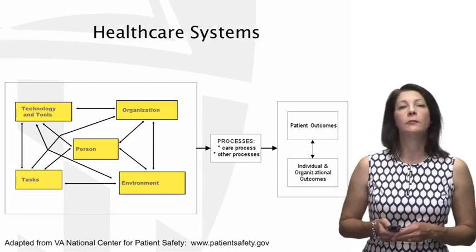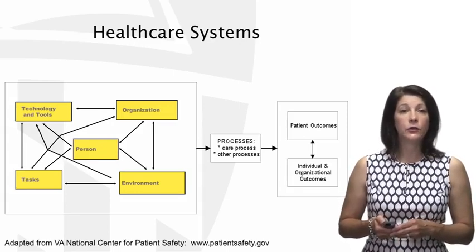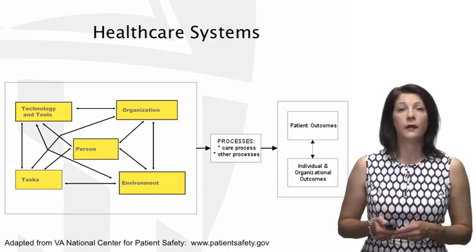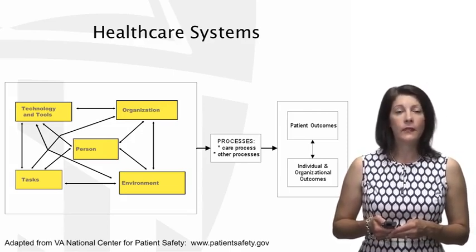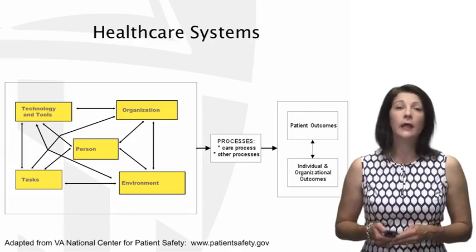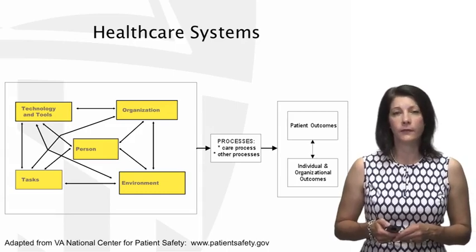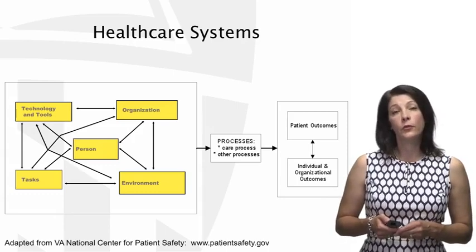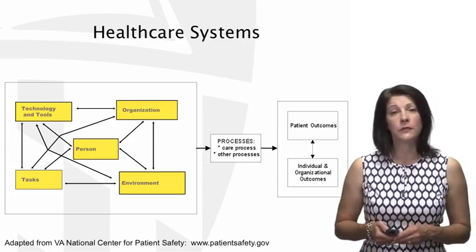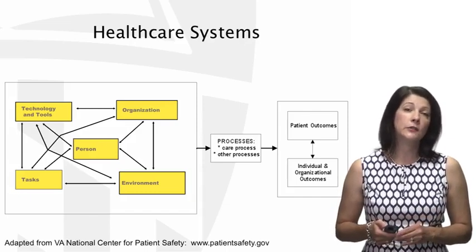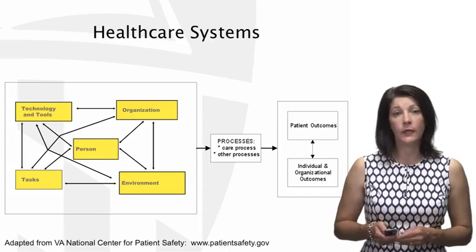This diagram depicts some of the components of the health care system that contribute to complexity: technology and tools, persons or the individuals involved in health care — including not only the providers but also the patients and their families — the organization, the tasks or the work of health care, as well as the environment. There are many intersections and interactions among these components. Through their effect on health care processes, they impact patient, individual, and organizational outcomes. To identify opportunities to improve health care safety, we must consider complexity and the interrelations of these many components.